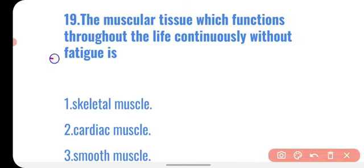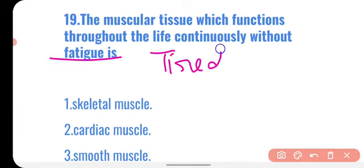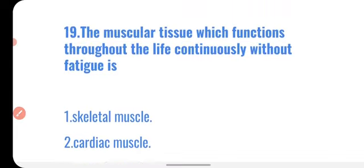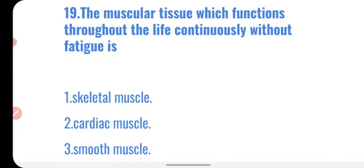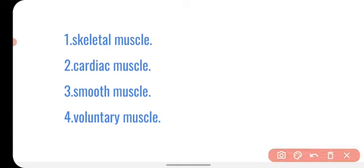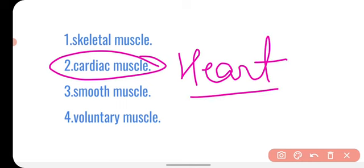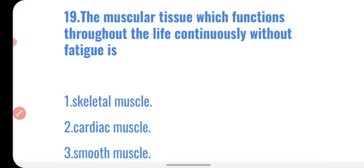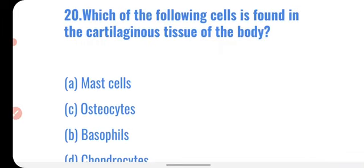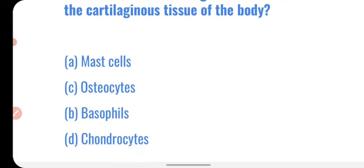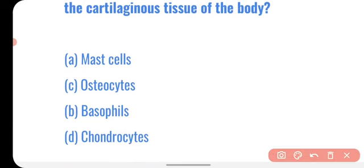Question nineteen: which muscular tissue functions throughout life continuously without fatigue? Options are skeletal muscle, cardiac muscle, smooth muscle, and voluntary muscle. Cardiac muscles, found in our heart, work throughout life and do not get tired. Correct option: cardiac muscles. Question twenty: which cell is found in cartilaginous tissue? Options include mast cell, osteocytes, basophils, and chondrocytes. Cartilaginous tissue contains chondrocytes. Correct option: chondrocytes.